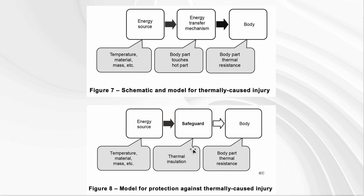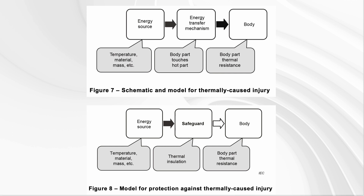The safeguard could be thermal insulation — that's probably the first thing everybody thinks of. It could also be keeping the parts less hot or making the hot parts less accessible. The least effective kind of safeguard is typically to ask the person to wear personal protective equipment such as gloves, or to provide instructions like a warning that something is really hot. The best type of safeguard is to act on the product itself to make sure there are no accessible hot parts.